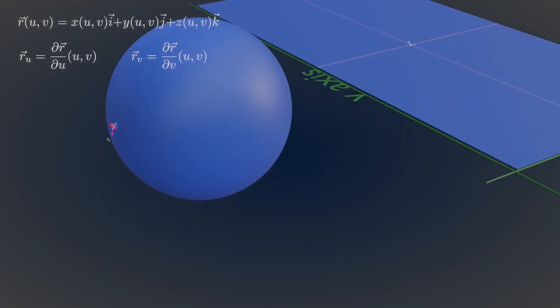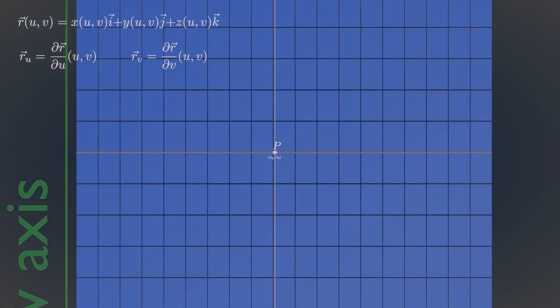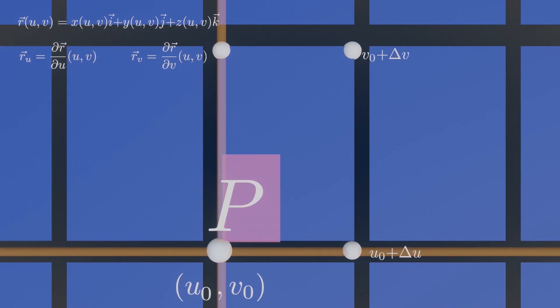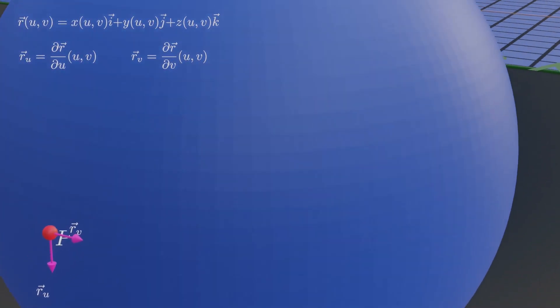Now in the UV plane, at that point, take a tiny infinitesimal piece of rectangle. The length and width of this rectangle can be mapped to our unit tangent vectors of our surface.